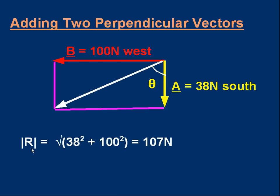The magnitude of the resultant is the length of that line using Pythagoras. It's the square root of 38 squared plus 100 squared. It comes to 107 newtons.